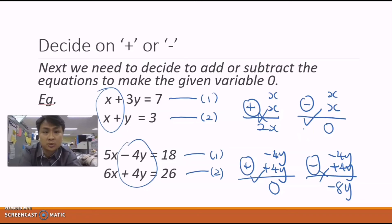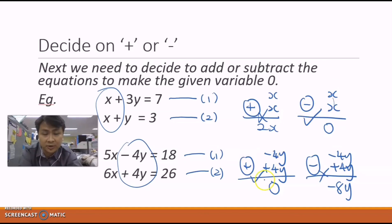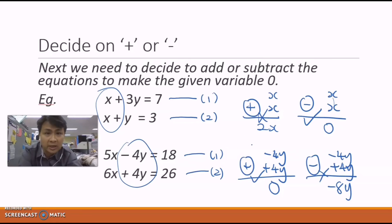There's a faster shortcut: look at the signs of the variable you want to remove. If the signs are the same in both equations, choose the minus operator. If the signs are different, choose the plus operator. If this is confusing, always fall back on the side working method — calculate both options and choose the one that gives zero.